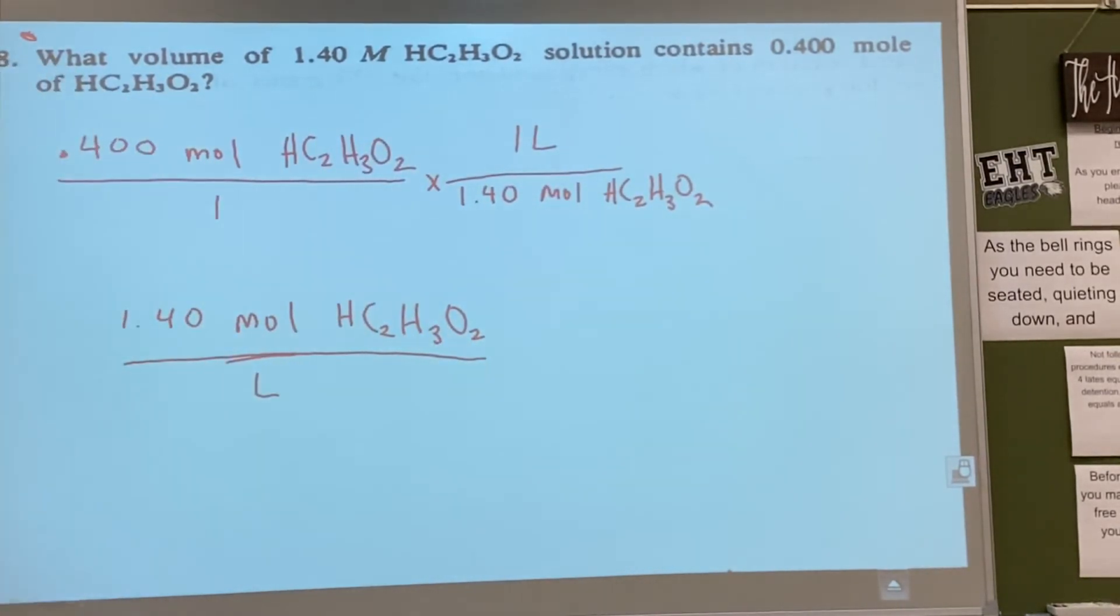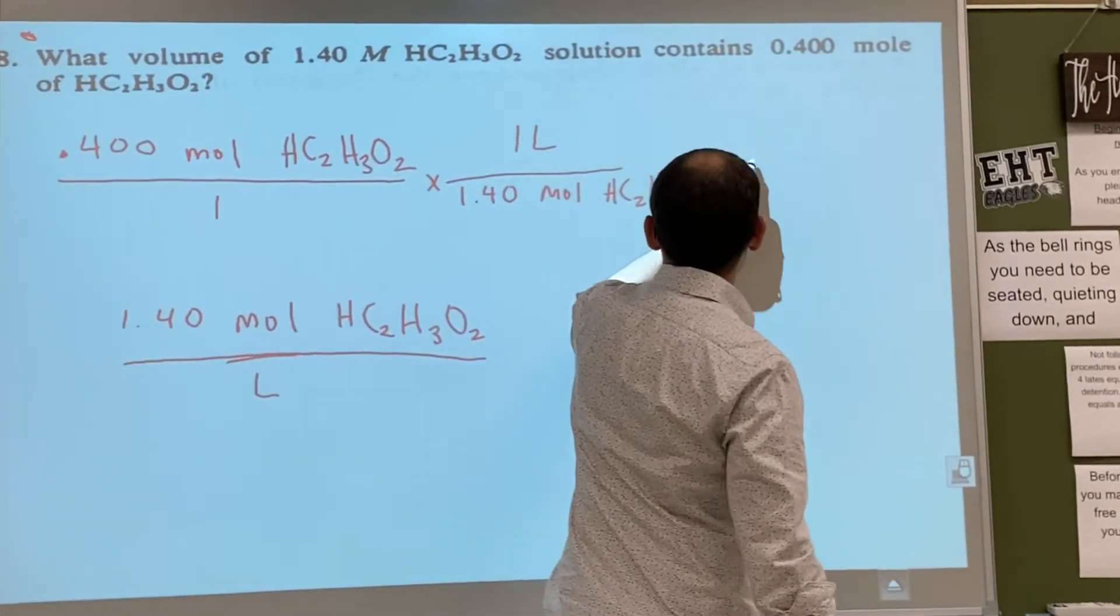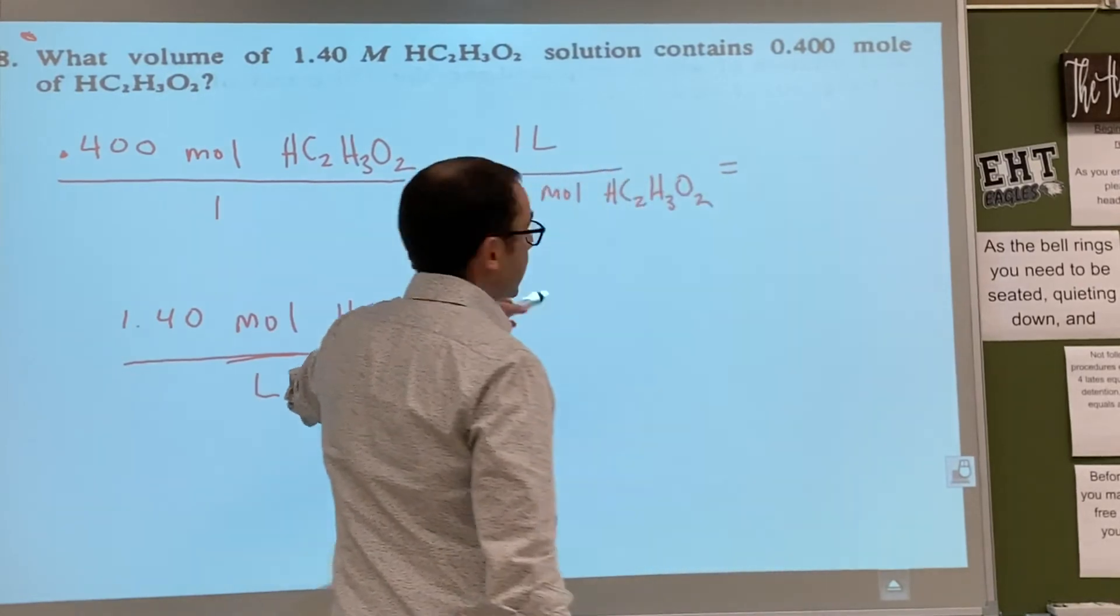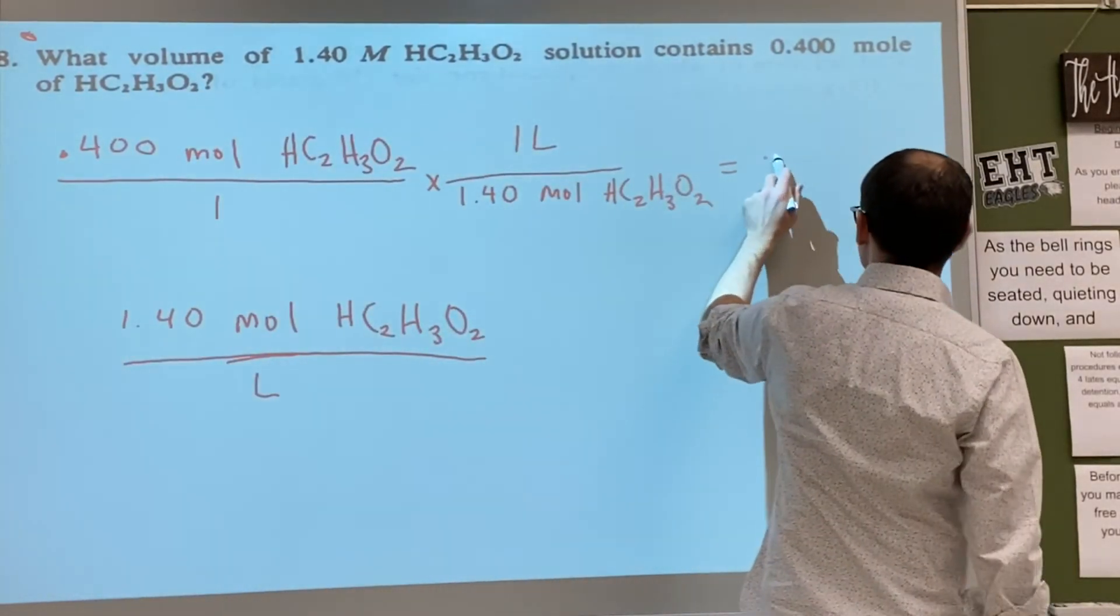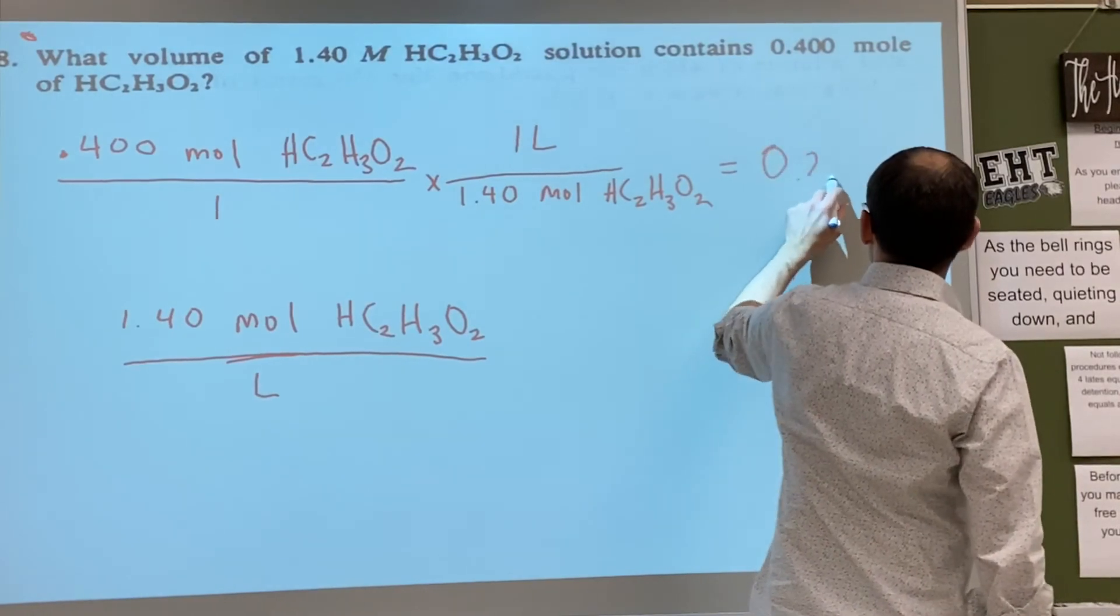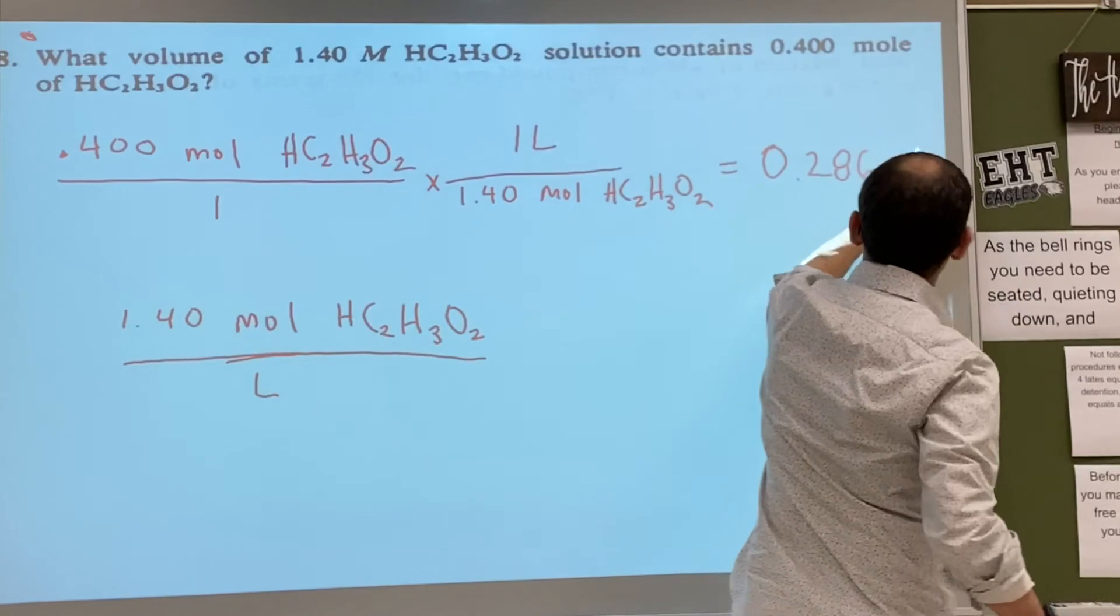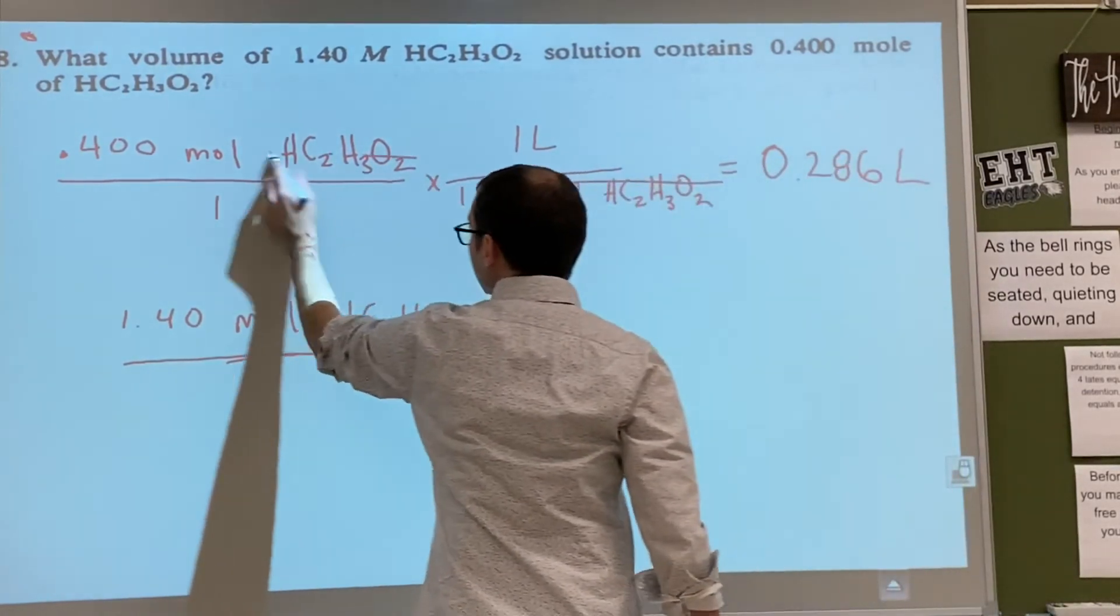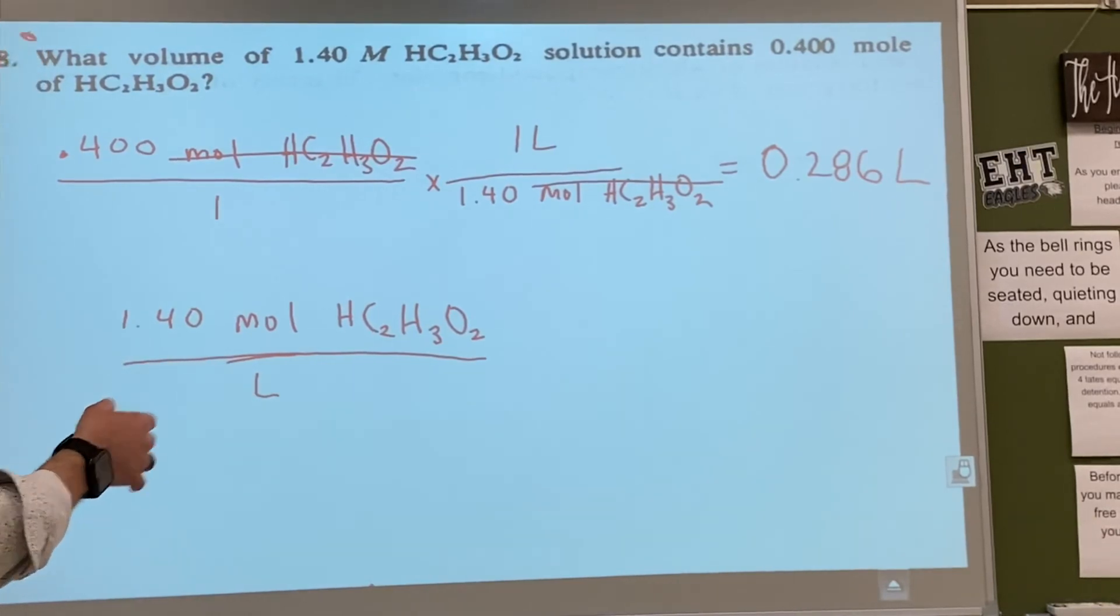Are we done? Yeah, now we just simplify it, right? We just divide 0.4 divided by 1.4 and you guys got what? 0.286 liters. What is that in the liters? Good, moles cancel out and that is it, right? Number of sig figs looks good.